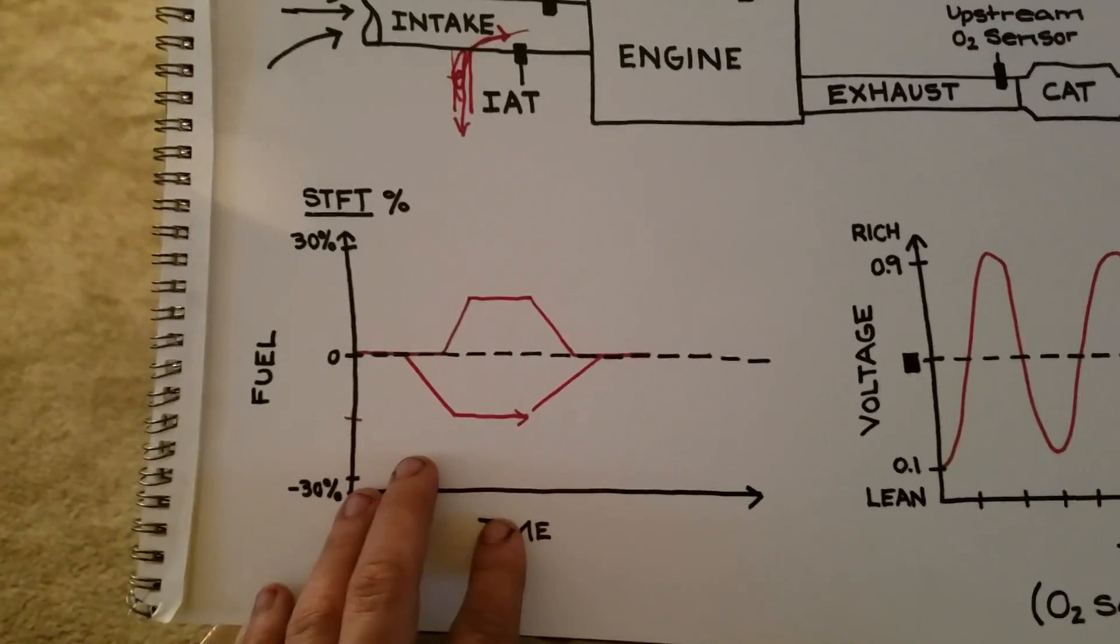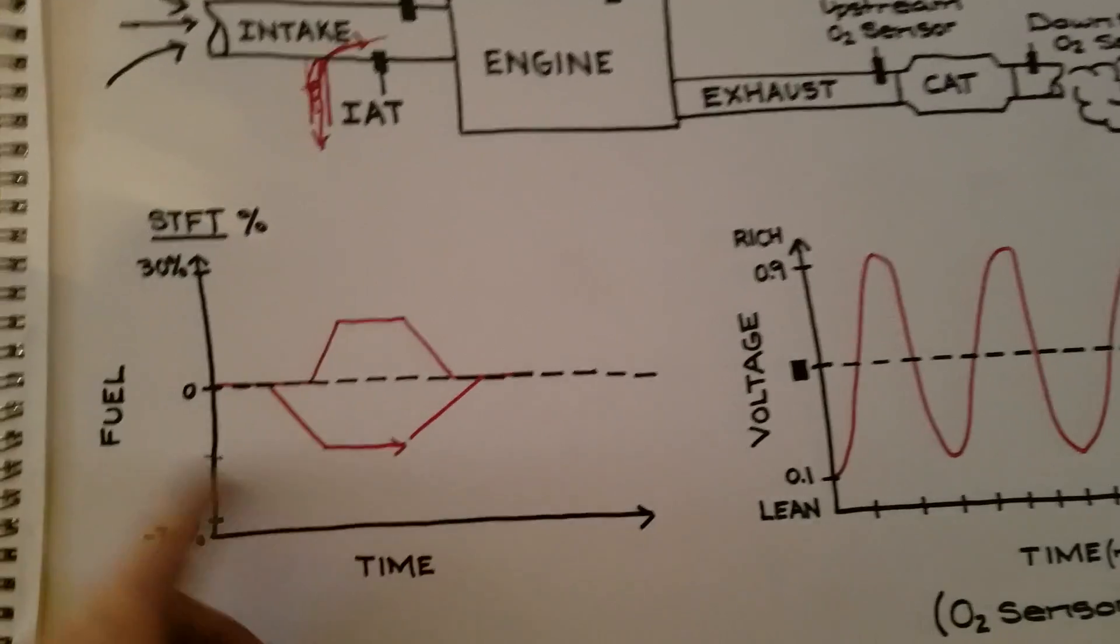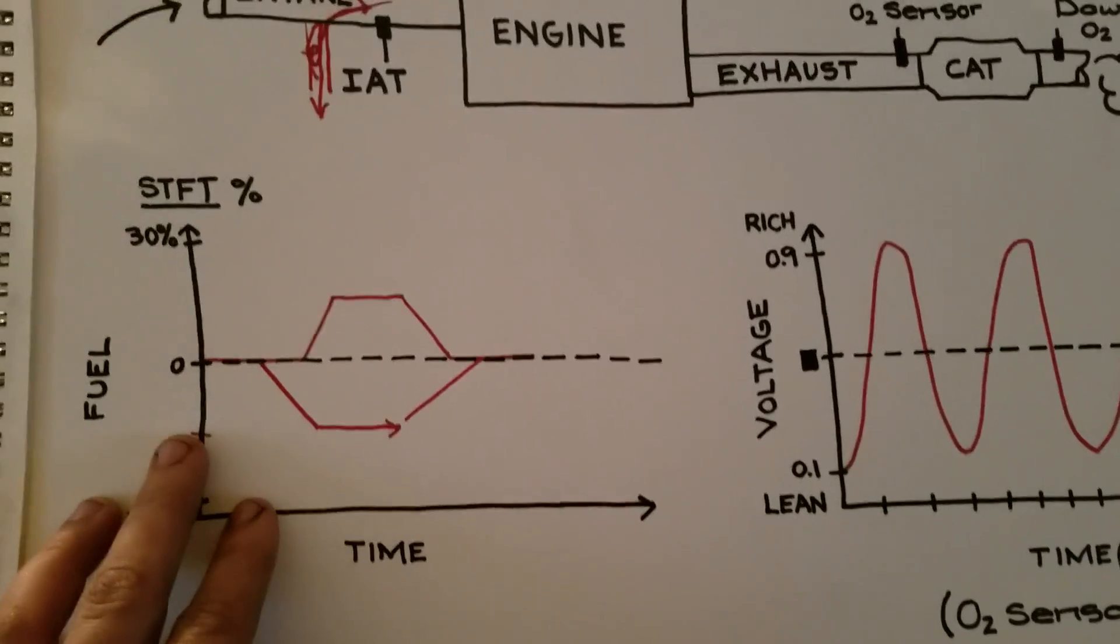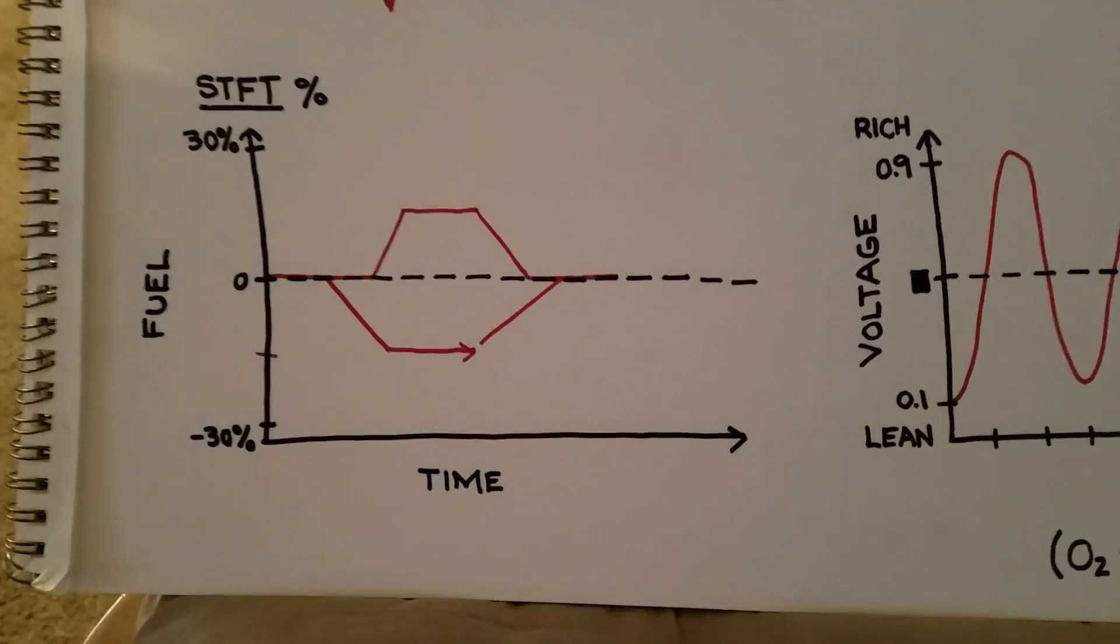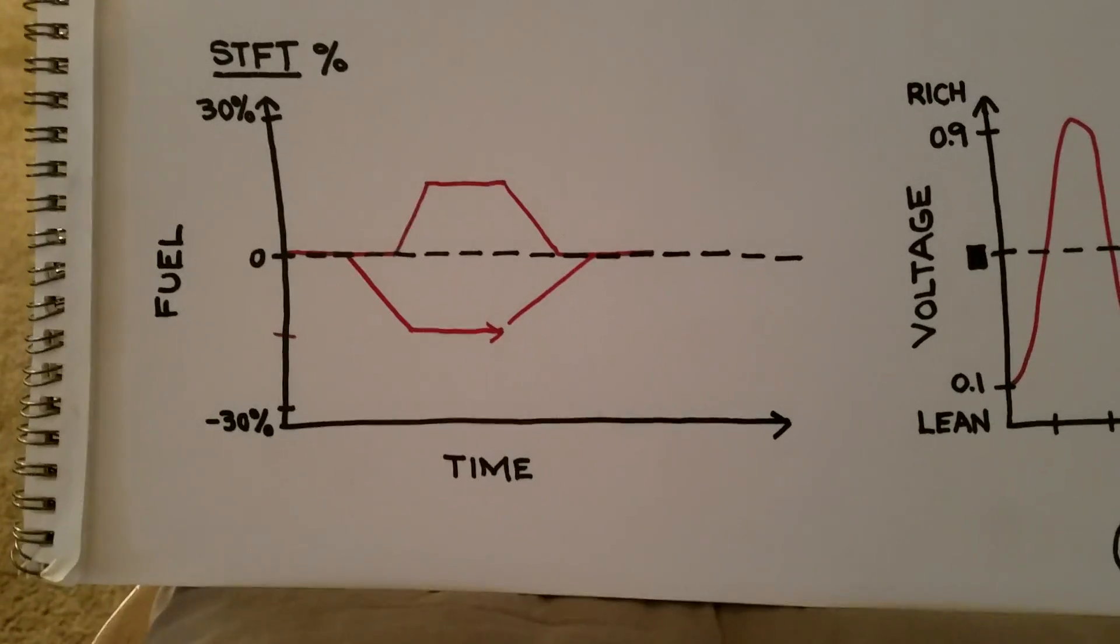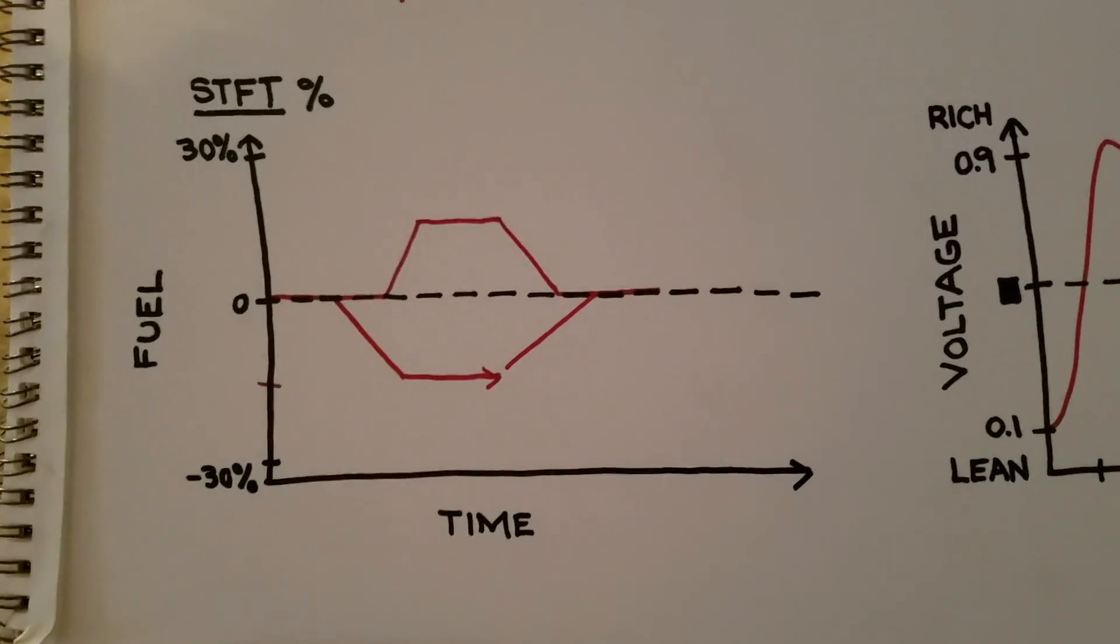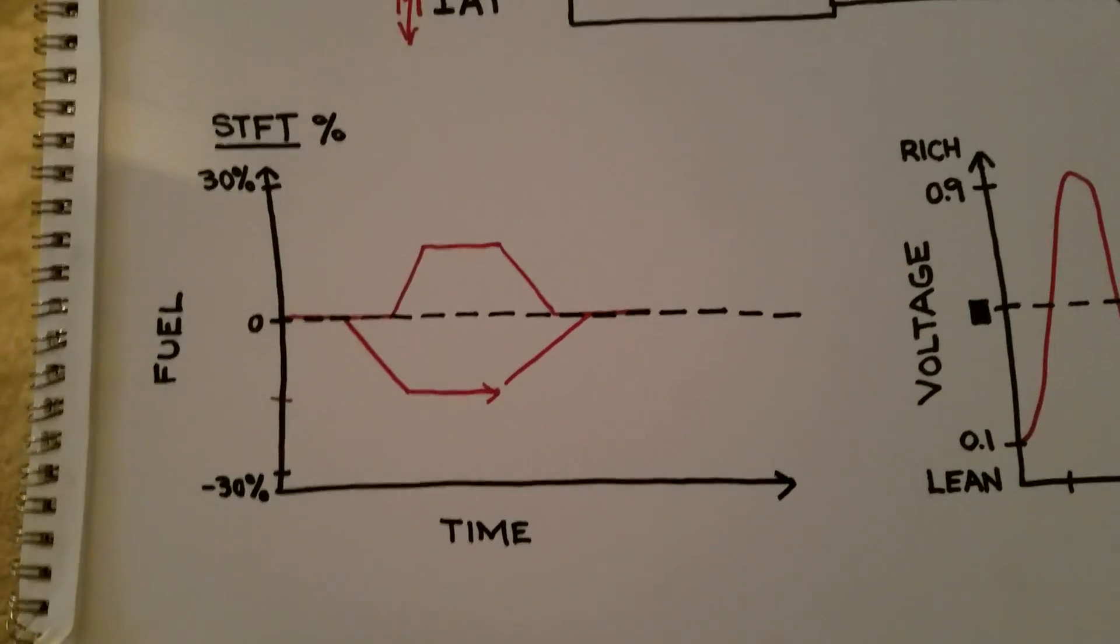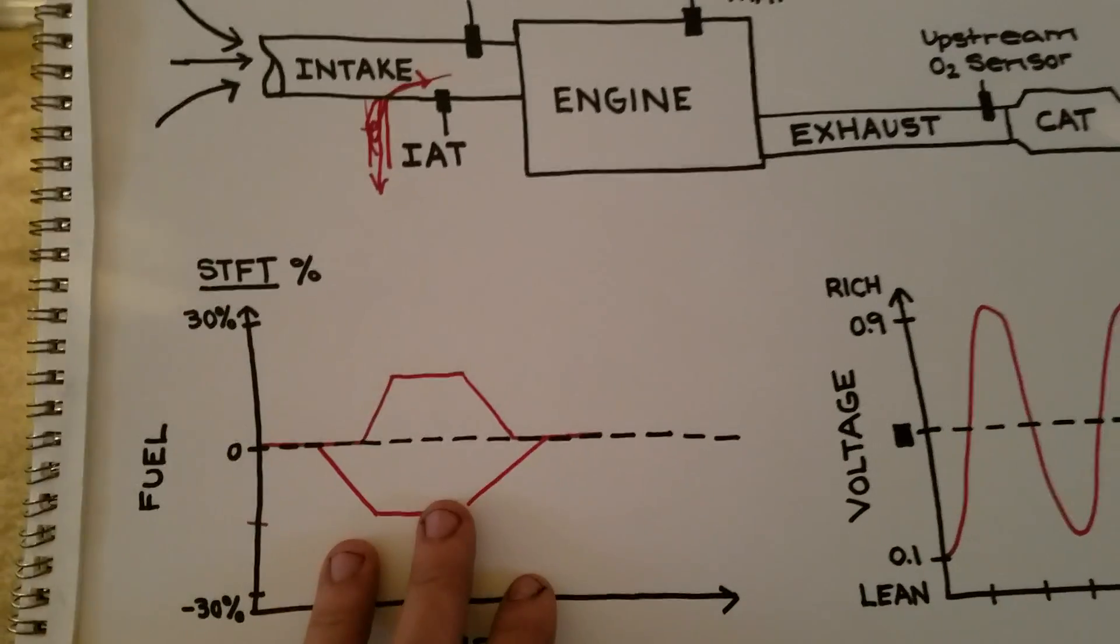When we're talking fuel trim, if we're in a perfect world, the computer would not have to add or take away any fuel at all. This is time, this is the amount of fuel, this is in percentage. Typically, when you reach anywhere from about 25 to 30% more or less fuel, that's when you get a fuel trim check engine light and you need to address it. Sometimes, if it's bad enough, you can actually have a no-start condition or very poor running condition because that ratio needs to be met for efficient combustion.